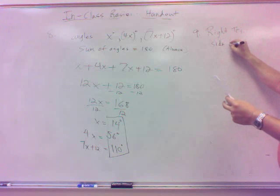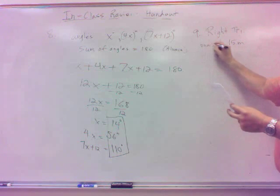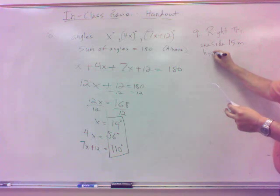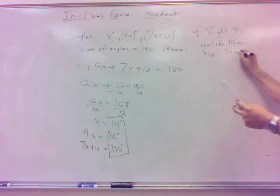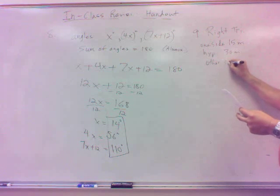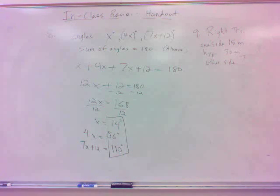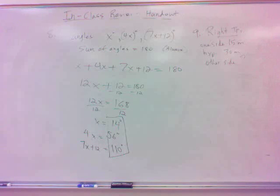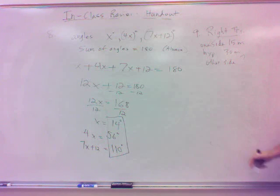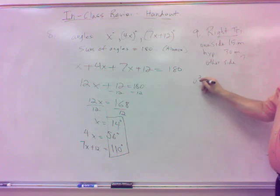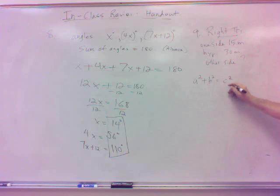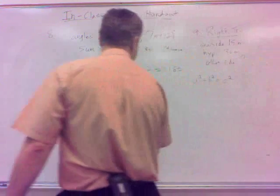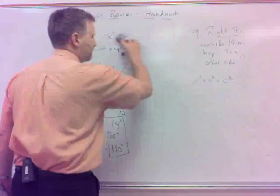Let's compare and contrast that to number 9. On number 9, we've got a right triangle, and one side is 15 meters. The hypotenuse is 30 meters. What's the other side? Is that the same formula? No. This is a right triangle, and we're dealing with sides. That's angles of a triangle. That's different. What do we know about the sides of a right triangle? What formula is that?